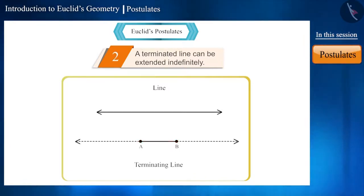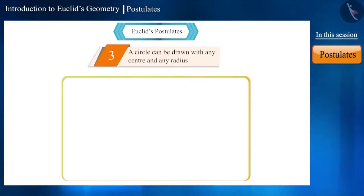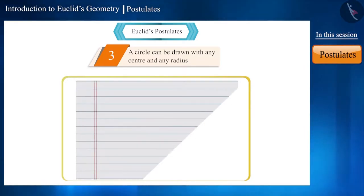The third postulate moves away from a line towards a circle. According to the third postulate, a circle can be drawn with any center and any radius. This postulate indicates that we can draw a circle with any radius by taking any center. Friends, by keeping this postulate in mind, on a piece of paper you can draw a circle with the help of a compass.